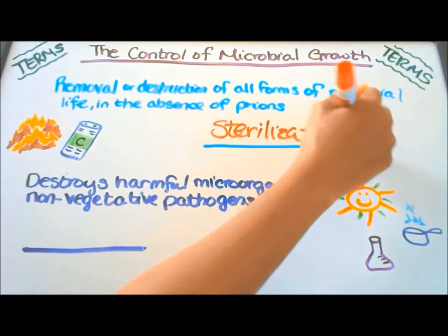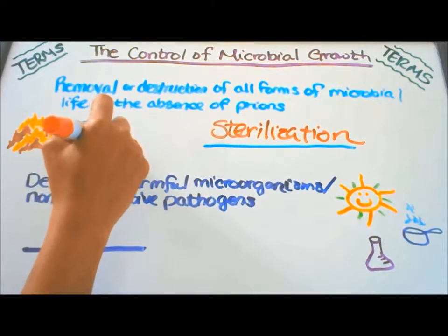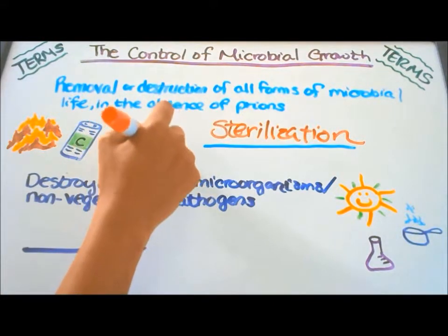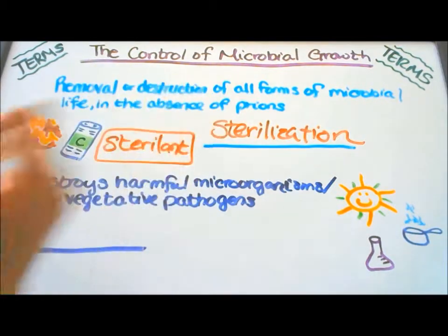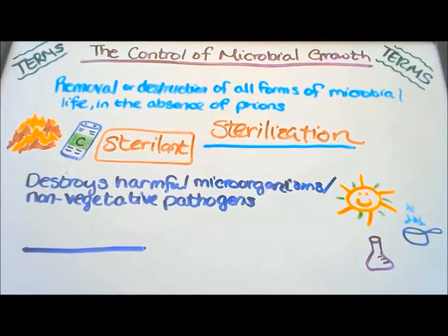Heat is used to kill microbes, and the sterilizing agent is called a sterilant. In commercial sterilization, canned foods are heated enough to kill microbes — for example, Clostridium botulinum. They produce endospores, and those endospores produce toxins that can be harmful to humans.